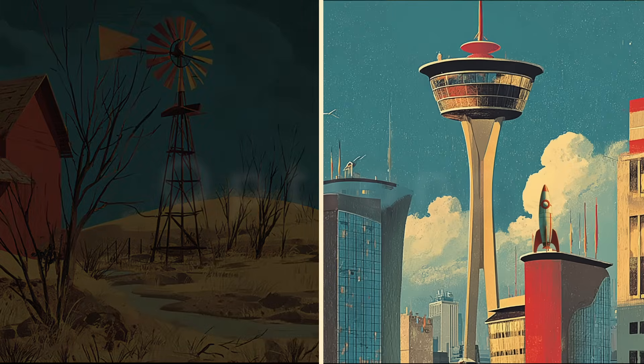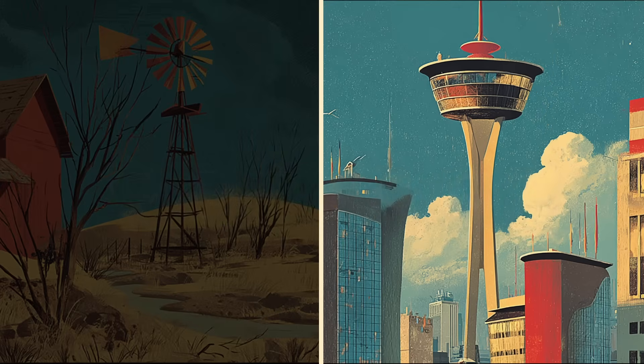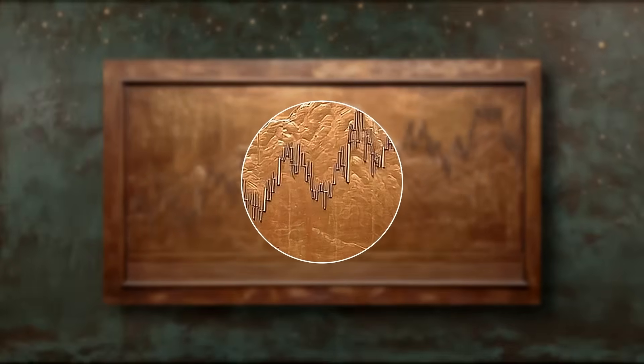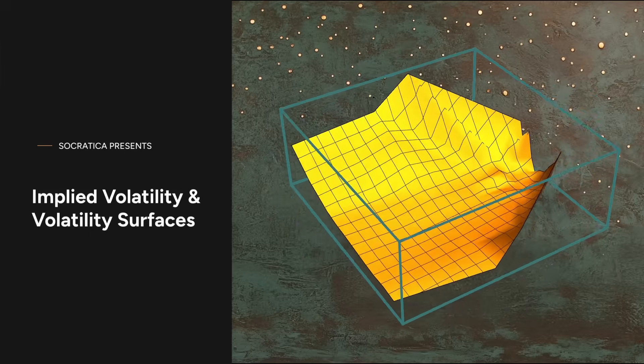We venture into the volatile world of options. Each option's price holds a clue, a glimpse of the market's own forecast of risk ahead. And when we piece those clues together, we get a 3D map of the market's expectations, known as the volatility surface.